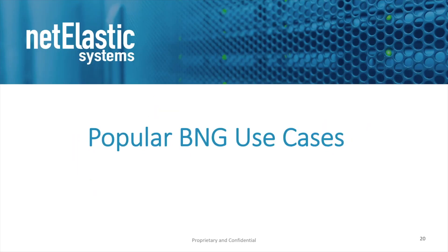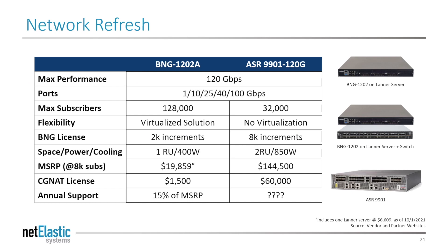Let's look at some popular BNG use cases. One is network refresh. In this comparison to a traditional router — one of the most popular in service provider environments, the ASR 9901-120G — we compare quite favorably. We support the same kind of overall bandwidth throughput and the same port configurations, but we support a larger number of subscribers. We're a virtualized solution, meaning we can scale up and down effectively. Our BNG is licensed in smaller increments, so you can make precision investments in your network. We're 1RU and 400 watts, so we have much better space, power, and cooling parameters. And our MSRP is a fraction of the cost of the alternative.